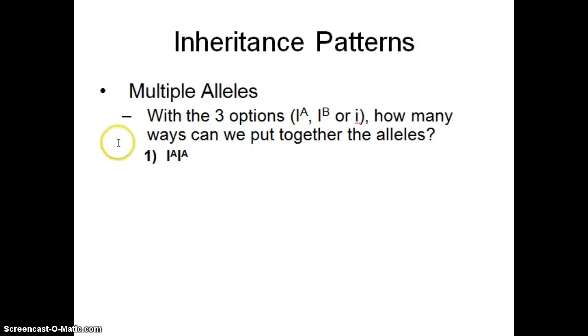So with those multiple alleles, again, we have three options. Capital I superscript A, capital I superscript B, or little i. And by the way, it's really important to put these capital letters here. Don't just write A and B because this is on the final exam and this is the proper way to write this. So get in the habit of doing the capital I superscript A. With those three different alleles, how many ways can we put those alleles together? And I've done one for you.